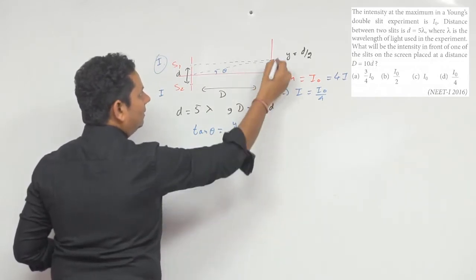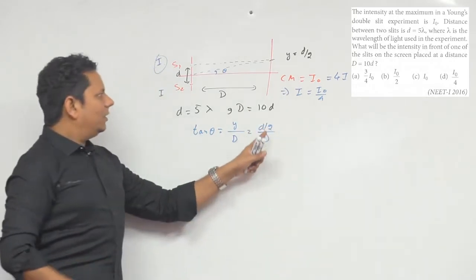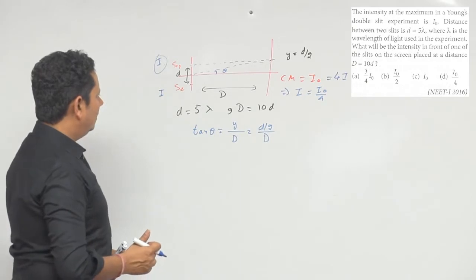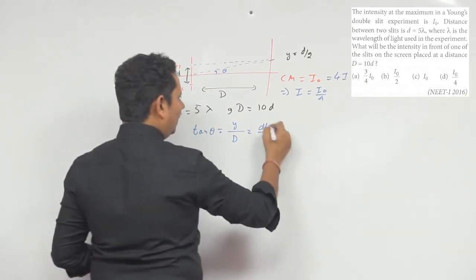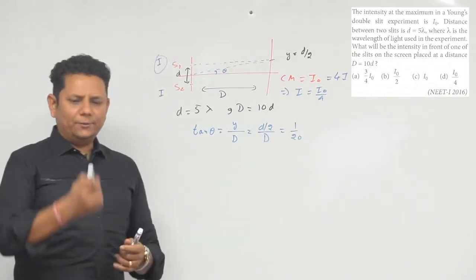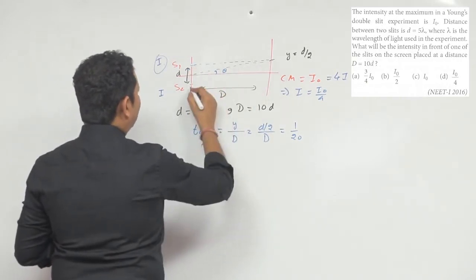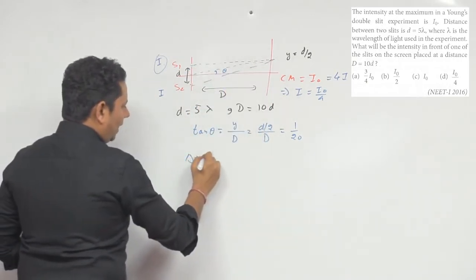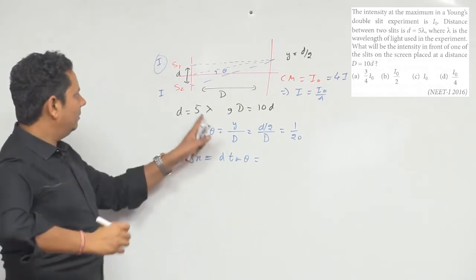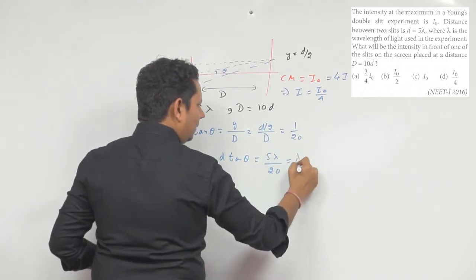tan theta की value होएगी Y divided by D, यानि (D/2) divided by D — तो tan theta = 1/2 नहीं, बल्कि Y = d/2 और D = 10d होने से tan theta = (d/2)/(10d) = 1/20। Path difference delta x = d × tan theta = 5 lambda × (1/20) = 5 lambda/20 = lambda/4.